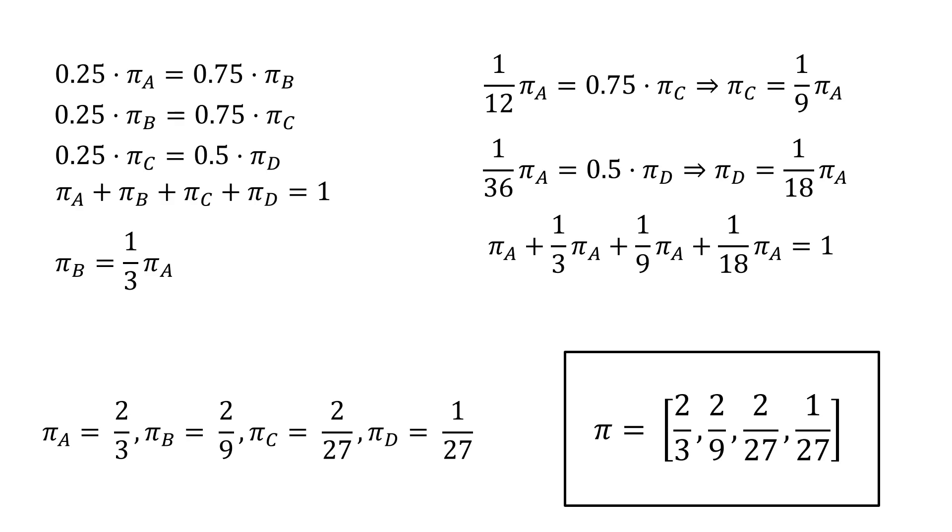If we recall that the stationary distribution is a vector containing the long run likelihoods that we are at each state in the DTMC, then it should make sense that by the law of total probability, these likelihoods should sum to 1.